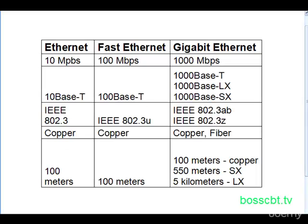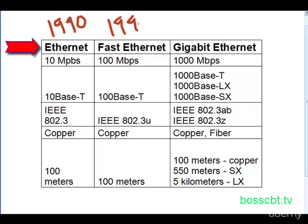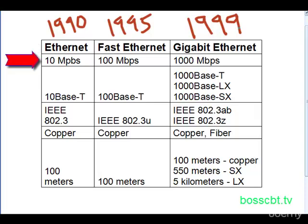Our three Ethernet specifications we'll be looking at are Ethernet, Fast Ethernet, and Gigabit Ethernet. Ethernet was developed in 1990, Fast Ethernet in 1995, and Gigabit Ethernet in 1999. All three were put out by the IEEE. The first thing to note is the speed of each specification: Ethernet is at 10, Fast Ethernet 100, and Gigabit 1000. As we progress, we keep getting faster and faster — there's more information to push.